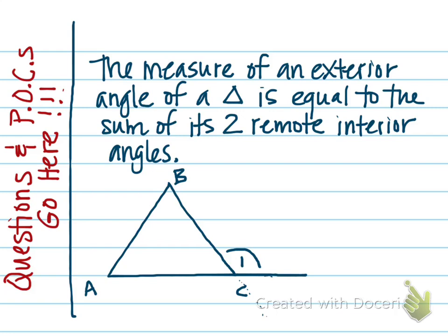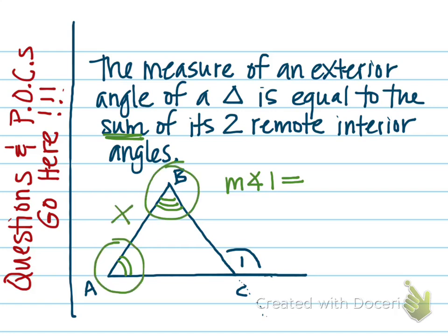Here's what the theorem says: the measure of an exterior angle of a triangle is equal to the sum of its two remote interior angles. There are three interior angles, and the two that are remote are angles A and B because they are the furthest away from C. The angle right next to C would be an adjacent interior angle. So the measure of angle 1 equals the measure of angle A plus the measure of angle B. You can replace these three measures with expressions.